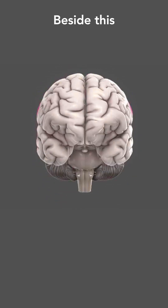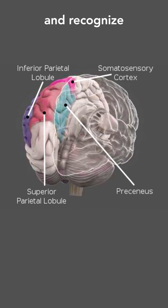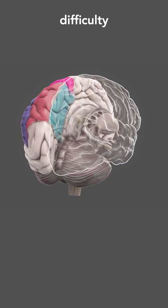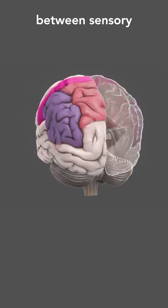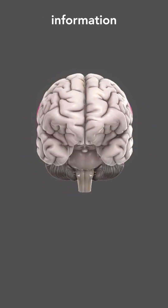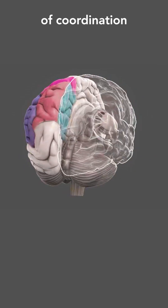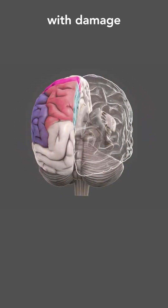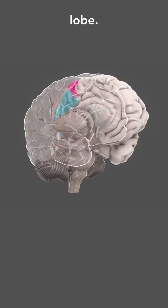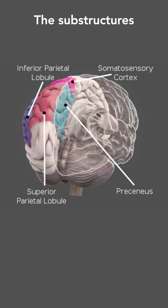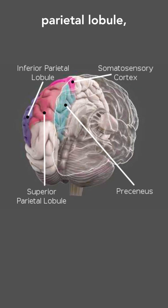Beside this, inability to locate and recognize objects and events, difficulty in discriminating between sensory information, and lack of coordination are associated with damage in the parietal lobe. The substructures are the somatosensory cortex, inferior parietal lobule, superior parietal lobule, and precuneus.